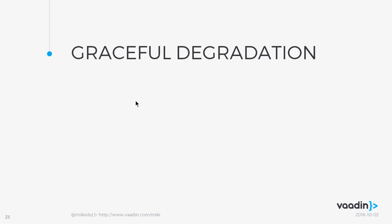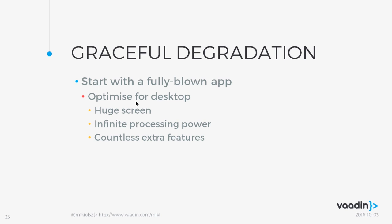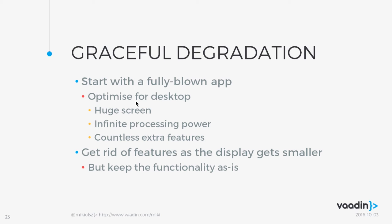There are two approaches for developing or targeting software for mobile platforms. The first one is called graceful degradation — you start with a fully blown app optimized for desktop, with a huge screen, lots of processing power, and all the bells and whistles. Then, as you scale to smaller devices, you start removing things while still trying to keep the functionality. So your software really has to work, but now the screen is smaller and there is less space to put all the elements around. That's why it's called graceful degradation.